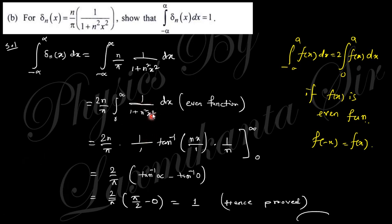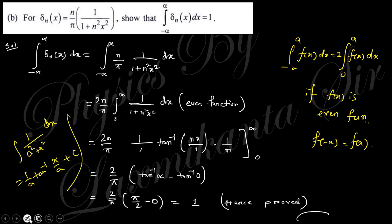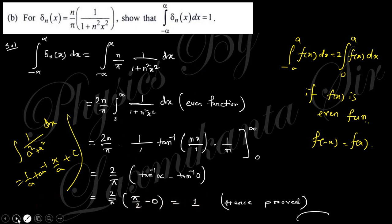Taking the integration using the formula ∫ 1/(a² + x²) dx = (1/a) tan⁻¹(x/a) + C, here a = 1 and x = nx. That is why we take 1/n — because if you let nx = z, the n terms cancel out. Putting in the upper and lower limits, you finally get the result equals 1, which is what we wanted to prove.